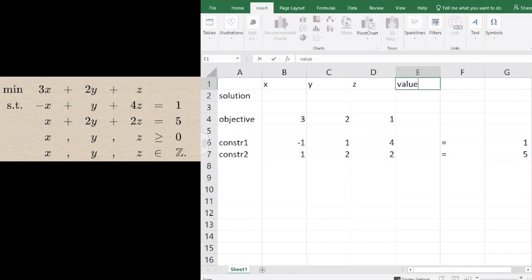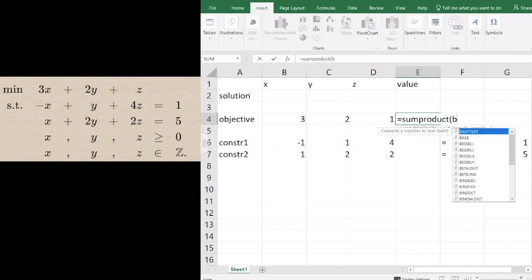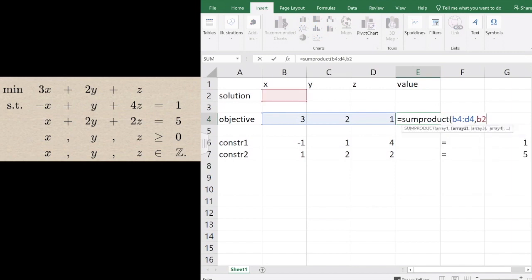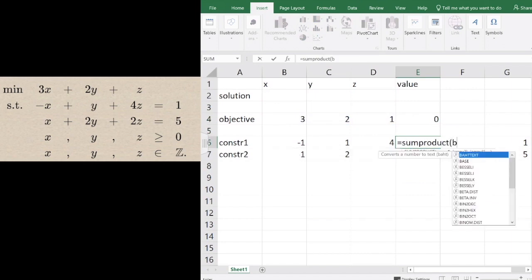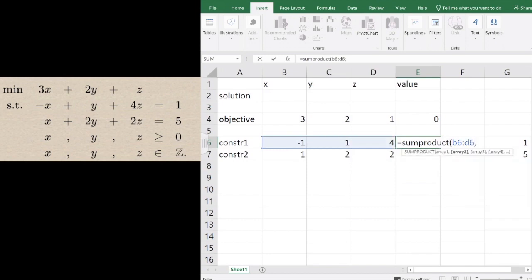The value of the objective function is given by the sum product of B4 to D4 and B2 to D2. The value of the left-hand side of constraint 1 is the sum product of B6 to D6 with B2 to D2.